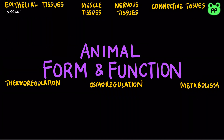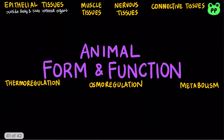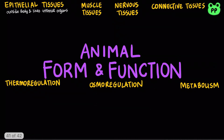Epithelial tissue is found both on the outside of the body and the linings of organs and cavities within the body. Epithelial tissues are classified by three main shapes: squamous, columnar, and cuboidal.